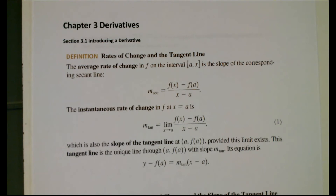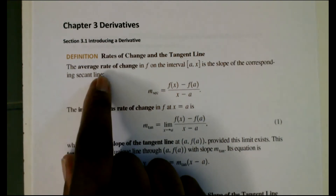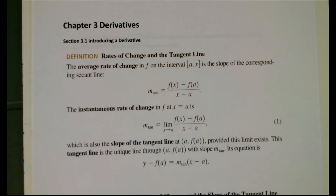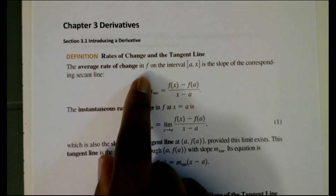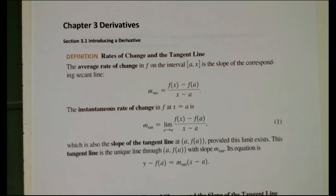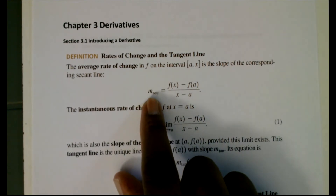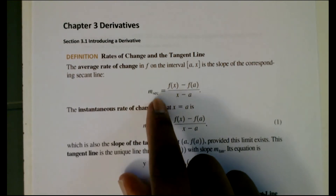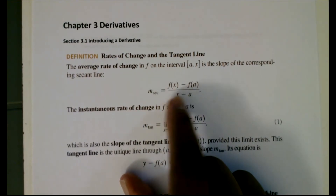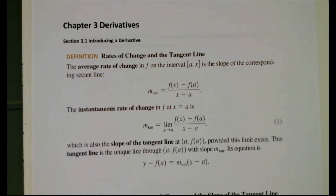Let's start with the definition of a rate of change and the tangent line. Back in Chapter 2 we talked about the average rate of change — the average rate of change of velocity. For the average rate of change of f on the closed interval from a to x, that's the slope of the corresponding secant line.